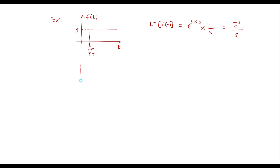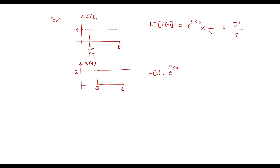Similarly, consider a step signal x of t with magnitude 2 that begins at t equal to 3. In this case, the Laplace transform is e to the power minus 3s times 2 over s, that is 2·e to the power minus 3s divided by s.